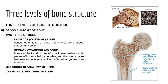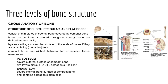For short bones, irregular bones, and flat bones, we see a sandwich structure: thin plates of spongy bone covered by an outer layer of compact bone, with bone marrow scattered within the spongy bone. There are no defined bone marrow cavities as we find with long bones.